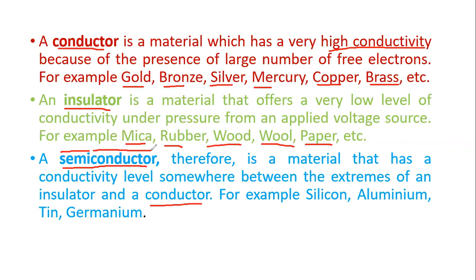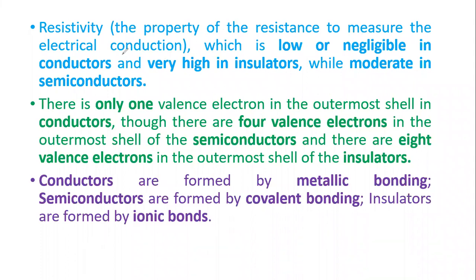Semiconductor is nothing but a revolution in the field of electronics. We will mainly focus in upcoming lectures on semiconductors. To summarize: a conductor has highest conductivity with maximum electrons, an insulator has no conductivity with no free electrons, and a semiconductor has conductivity between conductor and insulator. It is neither an insulator nor a conductor — that's why it is called a semiconductor.